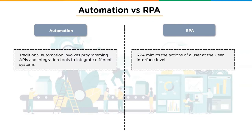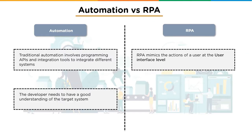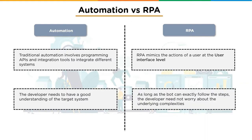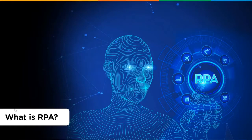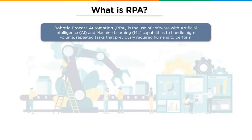Traditional automation involves programming APIs and integration tools to integrate different systems. RPA, on the other hand, mimics the actions of a user at the user interface level — mouse clicks or keystrokes. In traditional automation, the developer must understand the target system, but in RPA, as long as the bot can follow the steps, the developer need not worry about the underlying complexities.